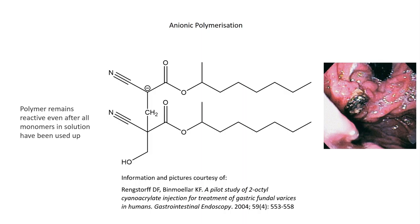Anionic reactions such as these are said to be living. Their initiation step is much faster than their propagation step. Therefore, all monomers begin growth at a similar time, meaning they have a low polydispersity.